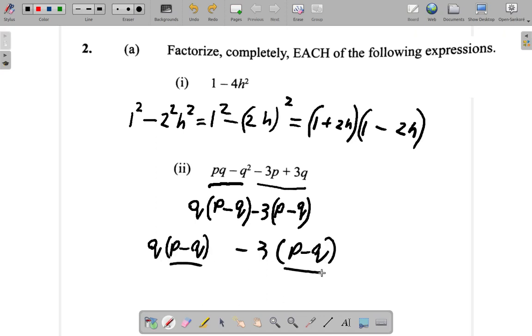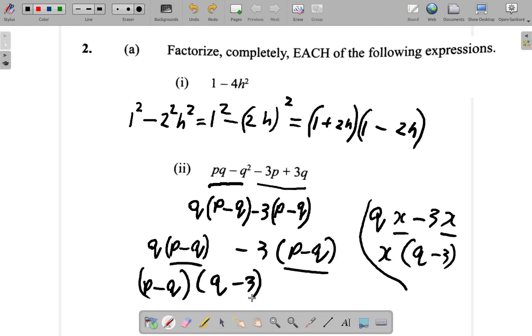It's just like if you would have qx minus 3x. The x is a common factor. It's the same thing here that happens with the p minus q. And you would put x outside the bracket and q minus 3 inside the bracket. That's what you would do. In the same way, you put p minus q outside the bracket and q minus 3 inside the bracket.